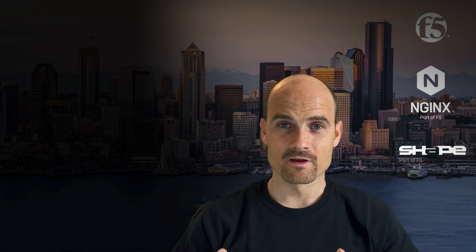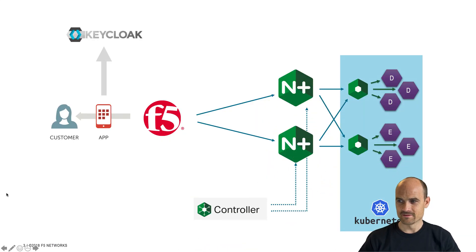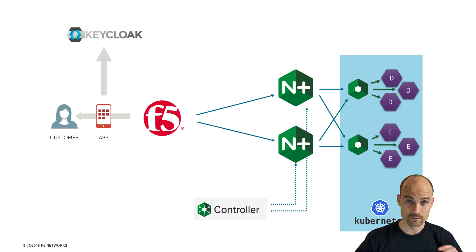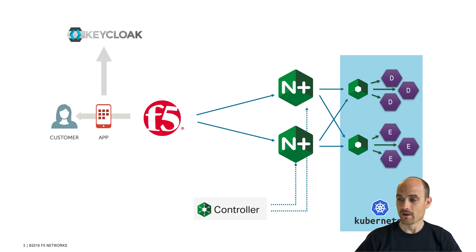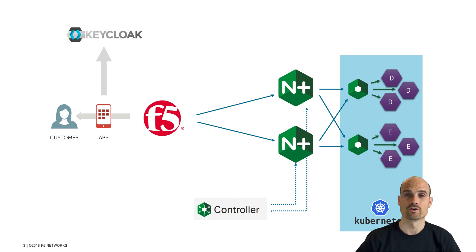First of all, it's important to understand my architecture for this demo. On the right side, there is an API application — a modern application running in microservices. It's a very simple application generating a sentence, where every word comes from a different microservice running in Kubernetes. In front of this Kubernetes cluster, there is a standalone Nginx Plus instance configured as an API gateway, and this API gateway is adopted and managed by an Nginx Controller version 3.16 in this demo.